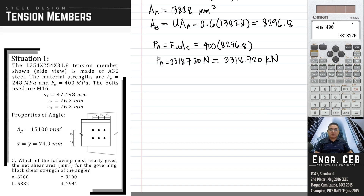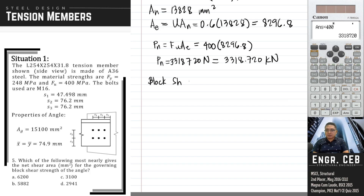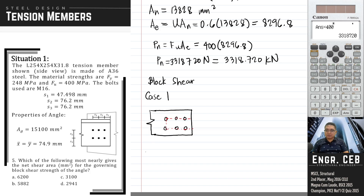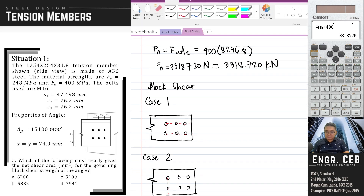Problem 5: which of the following most nearly gives the net shear area for the governing block shear strength of the angle? For block shear, we have to consider the failure path consisting of shear area and tension area. For this angle, we will consider two cases of block shear. For case one, we consider this path, and for case two, we consider this path of failure.